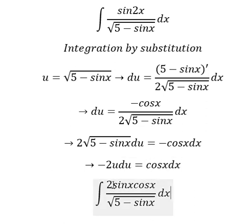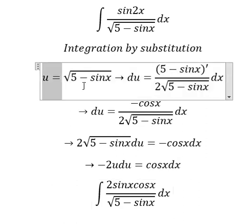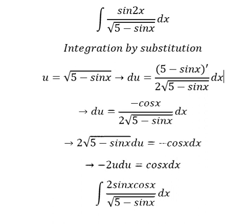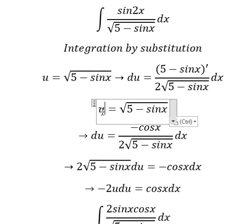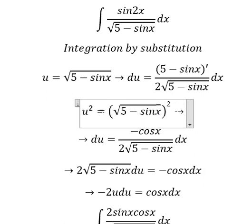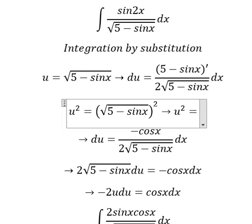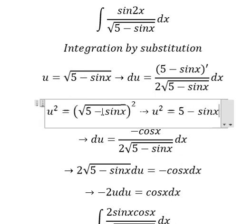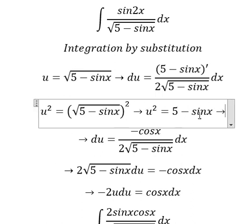Now in here, we see there is sin x. So in this one, I need to use this one in here. We put the power of two for both sides to cancel the square root, and we have five minus sin x. So I will put sin x to the left.